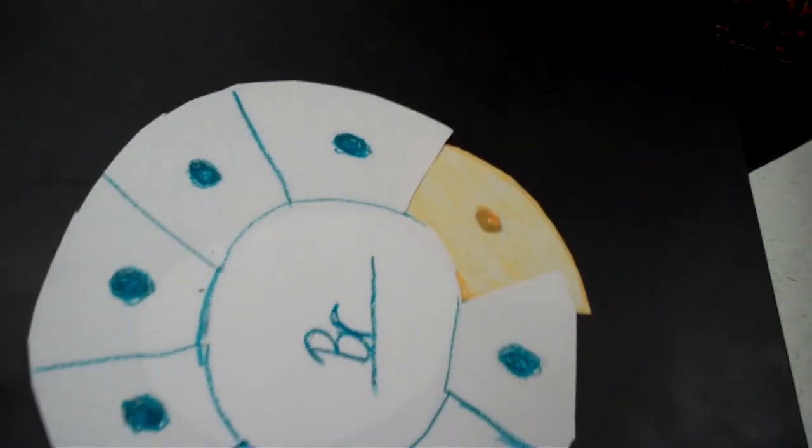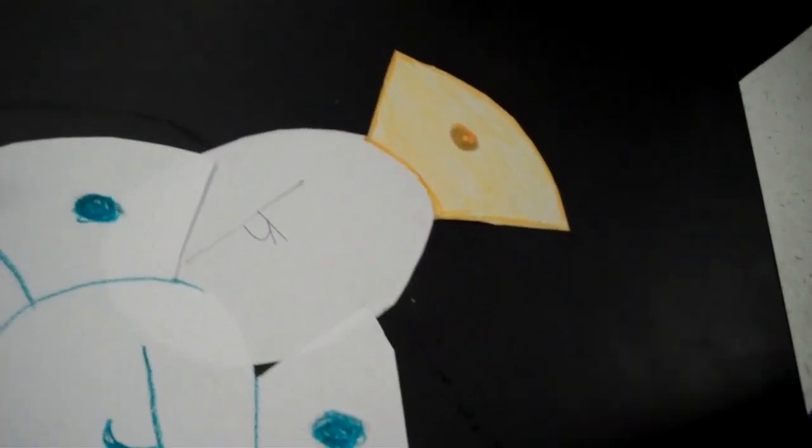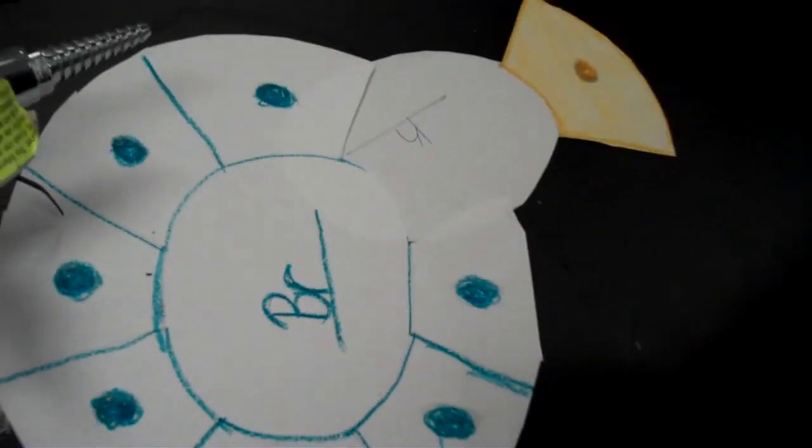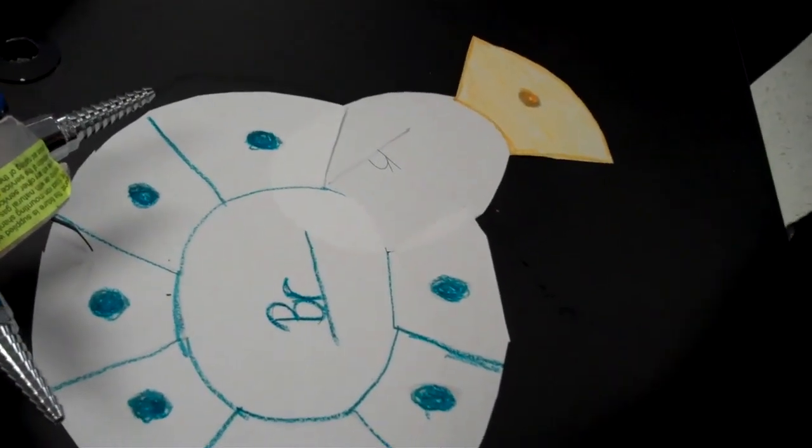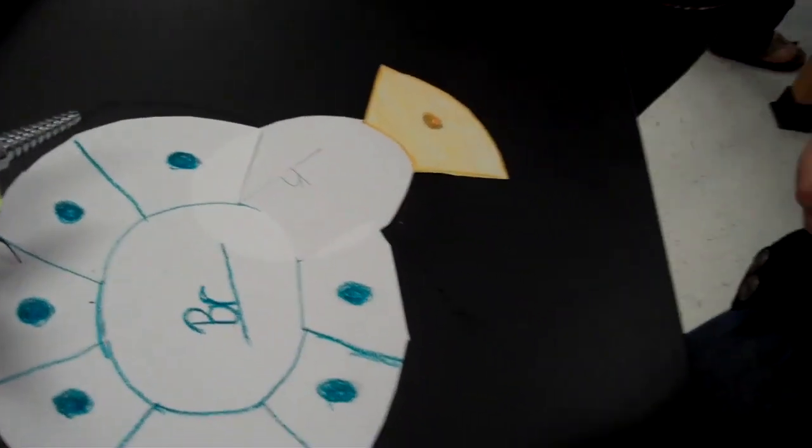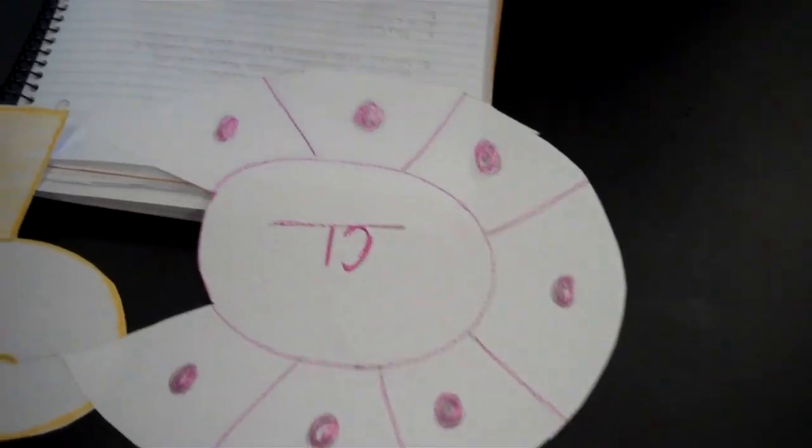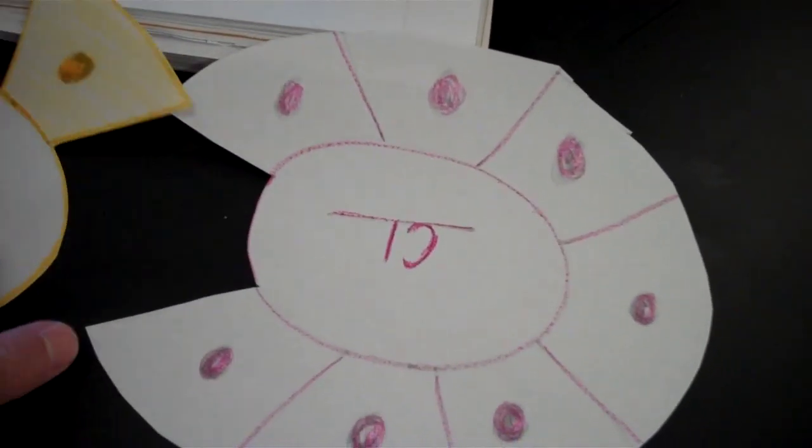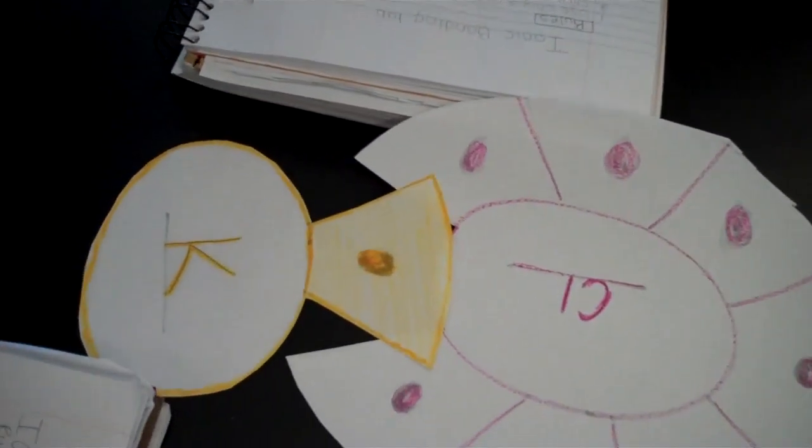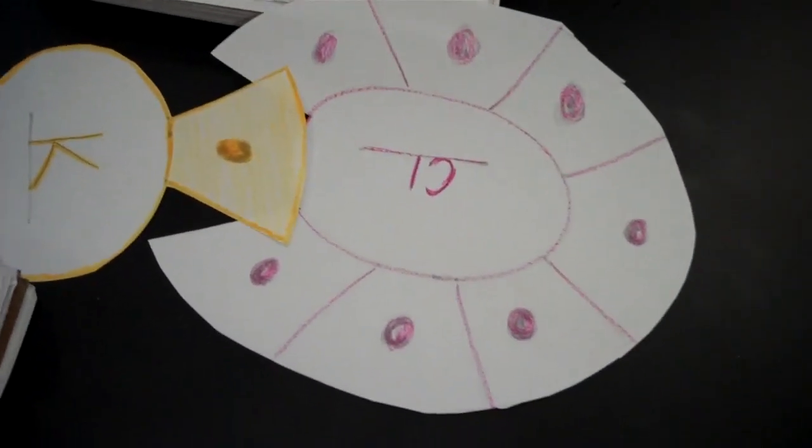Nice. So what's the formula for potassium and bromine? BRK. Which one goes first? K. That's good. So you guys made K and Cl, right? Nice.